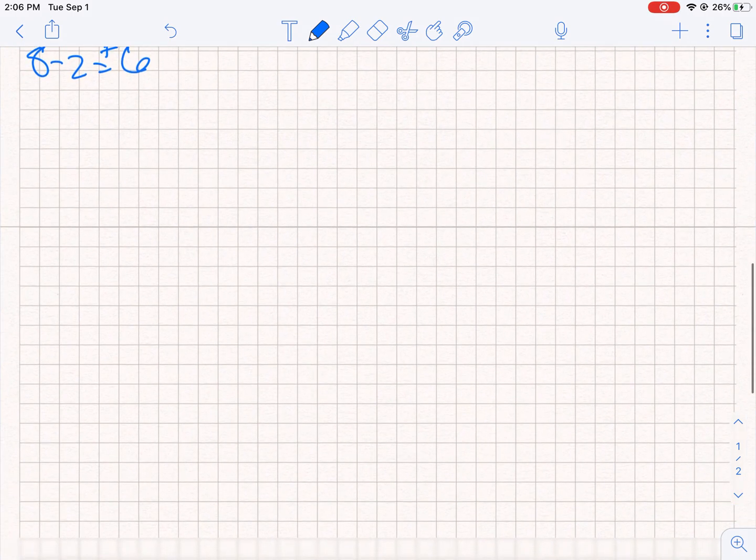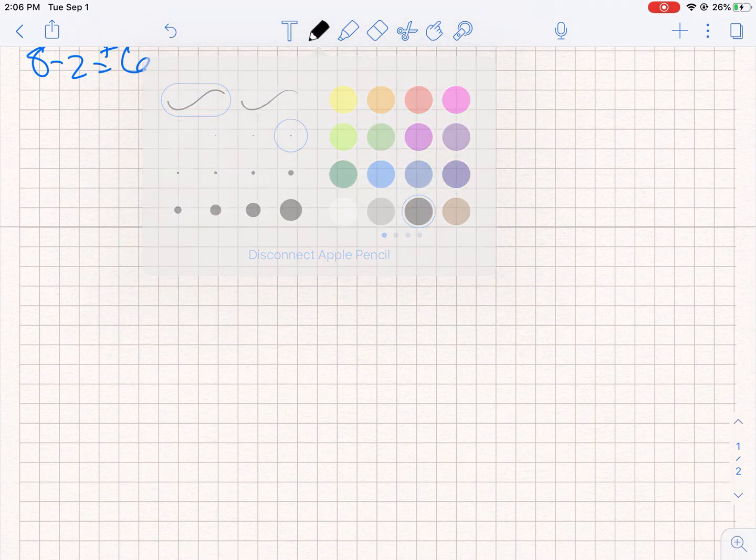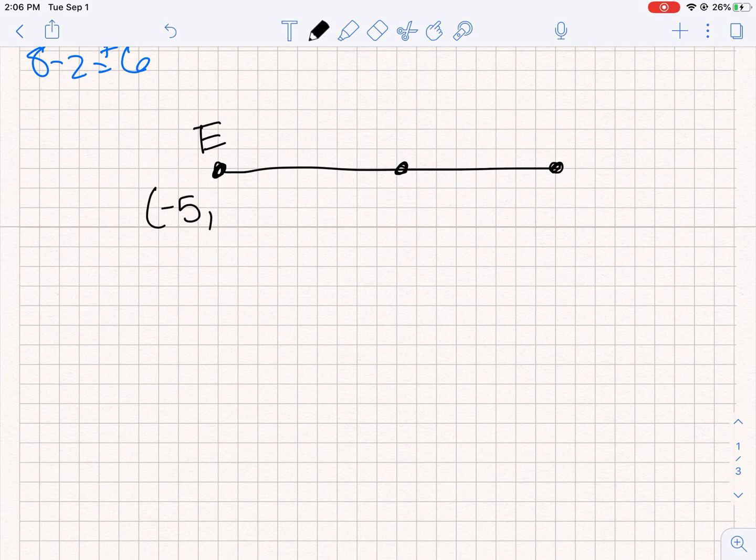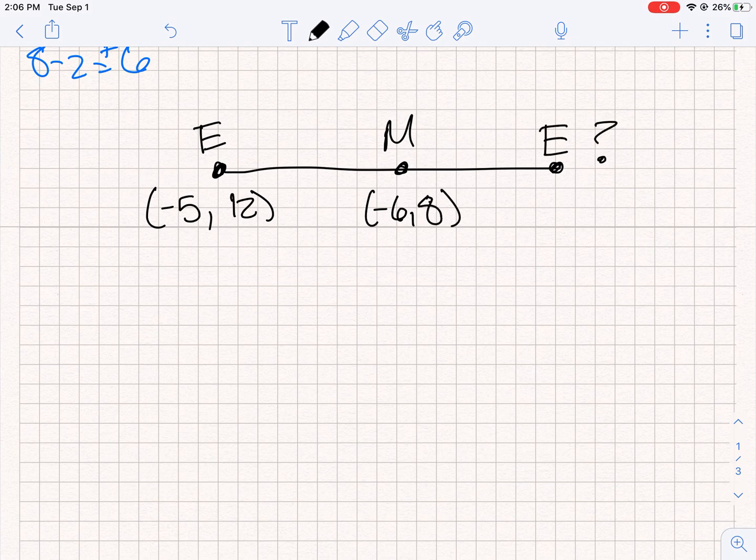Alright, let's do another example. So I will just make it up really quick. So let's say our endpoint is (-5, 12). Our midpoint is (-6, 8). And what is our other endpoint here?